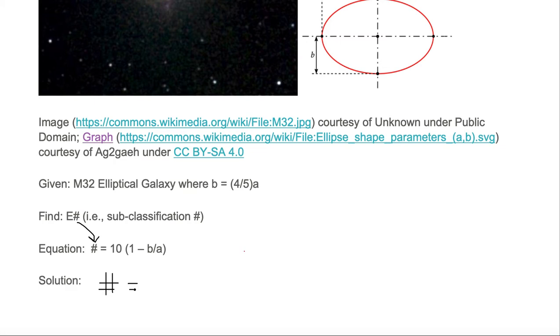The number is equal to 10 times the parentheses of 1 minus B over A. Now we know A, and we need to substitute for B. We're given B is four-fifths A, so we need to substitute it into the equation. So we have a four on the top, a five on the bottom, and an A on the top, close parentheses.